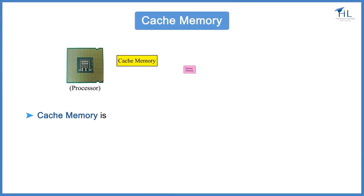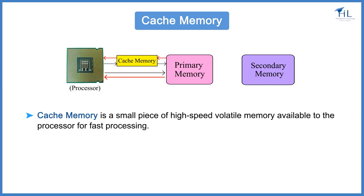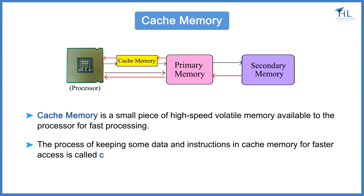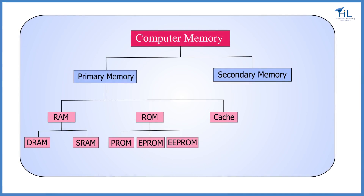Cache memory is a small piece of high-speed, volatile memory available to the processor for fast processing. The most recently accessed data is stored in the cache memory. Whenever the processor needs any piece of data or instructions, it checks the cache first. If it is unavailable there, then the primary memory is accessed. If it is unavailable in the primary memory, then finally secondary memory is accessed. The process of keeping some data and instructions in cache memory for faster access is called caching. Finding data or an instruction in cache is called a cache hit. Here is a chart showing the types of primary memory.